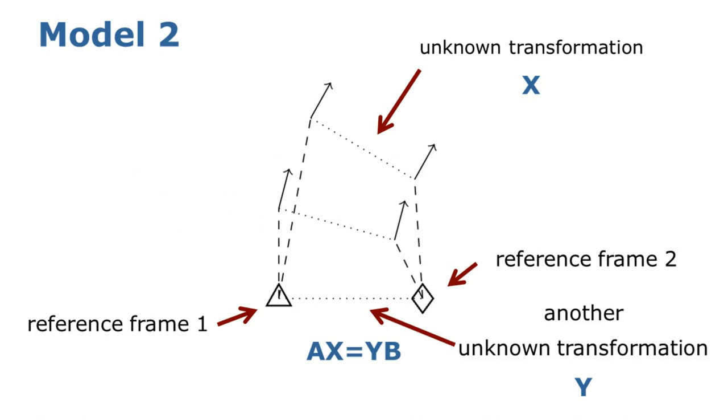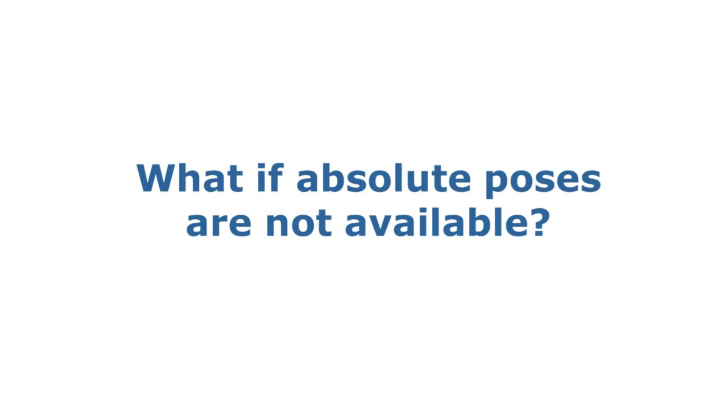Notice that both the first two models utilize absolute pose measurements, but absolute poses are not always directly available or can be erroneous because of drift. In this case, using relative pose over small time periods is more reasonable. And this leads us to the use of the third model.